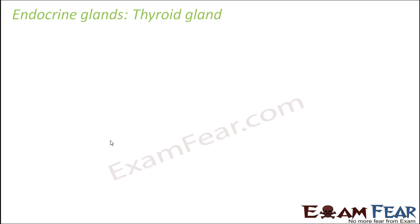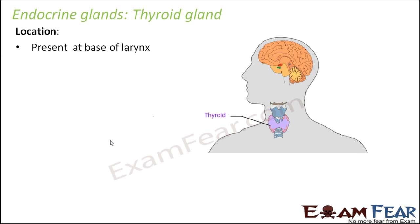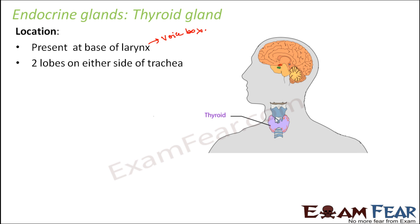Let us talk about the next important endocrine gland — the thyroid gland. It is present at the base of the larynx, which is the voice box. The thyroid gland is butterfly-shaped, located slightly below the neck region, and appears brownish red in color. It has two lobes on either side of the trachea, which is the windpipe.